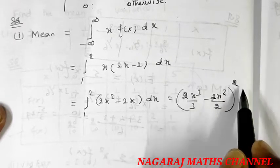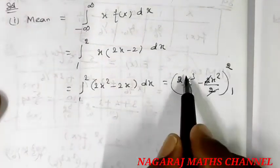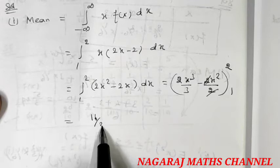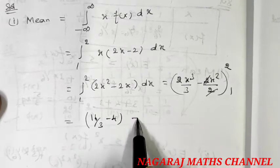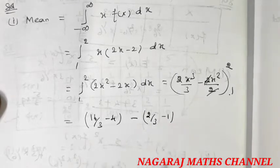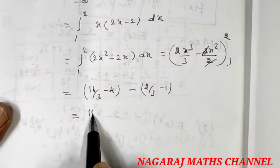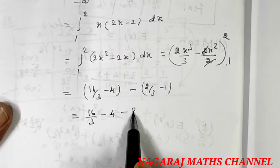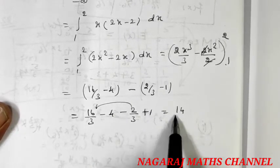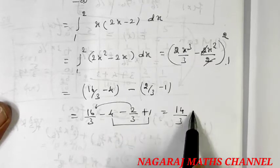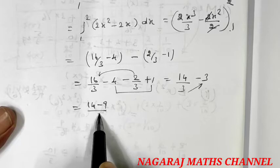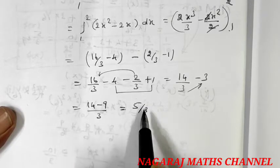Evaluating: 2x cubed divided by 3 minus 2x squared divided by 2, with upper limit 2 and lower limit 1. At upper limit 2: 16 by 3 minus 4. At lower limit 1: 2 by 3 minus 1. So we get 14 by 3 minus 3, which equals 14 by 3 minus 9 by 3, which is equal to 5 divided by 3.